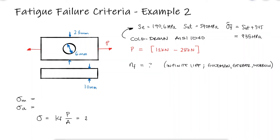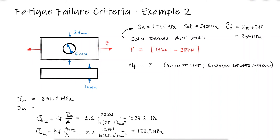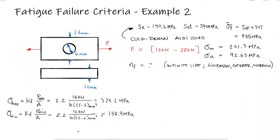There's a fatigue stress concentration factor that we previously calculated, and there will be a maximum stress due to the maximum load and a minimum stress due to the minimum load. The mean stress will be the average, and the alternating stress the distance from that average to either the minimum or the maximum stress.